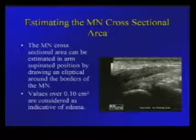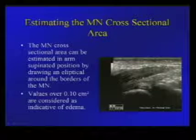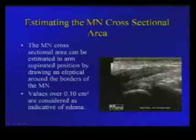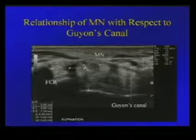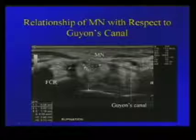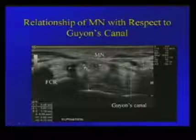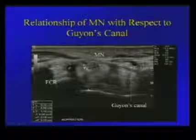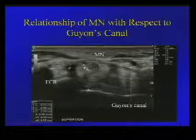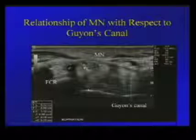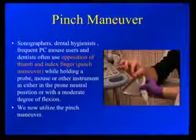Transverse images are also followed by longitudinal images showing the area of maximum swelling. Shown here is the anatomy of the median nerve in the carpal tunnel, the flexor retinaculum, relative to Guyon's canal and the location of the ulnar nerve. Note the position of the median nerve relative to the capitate and the flexor carpi radialis.